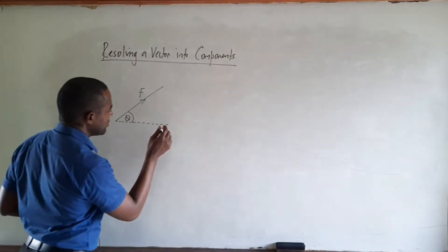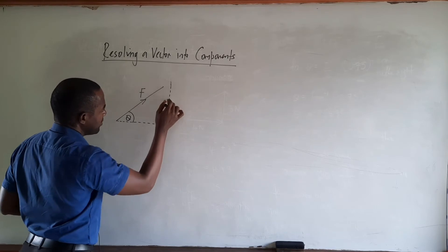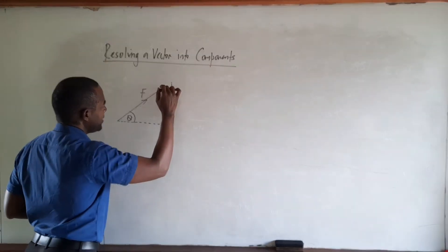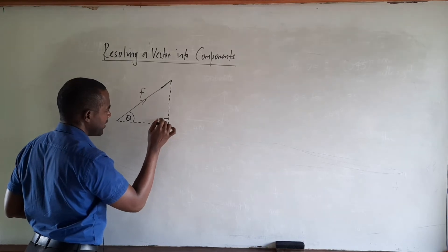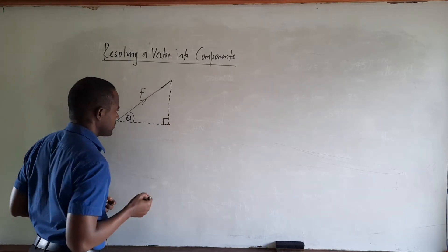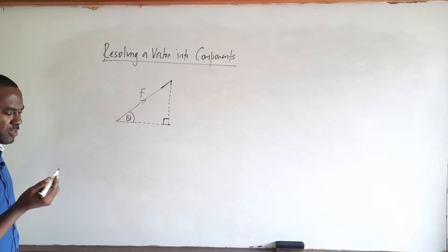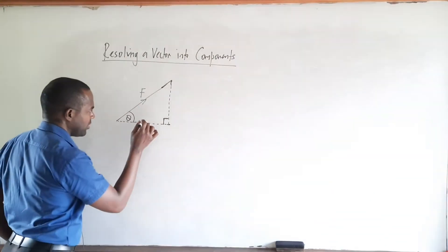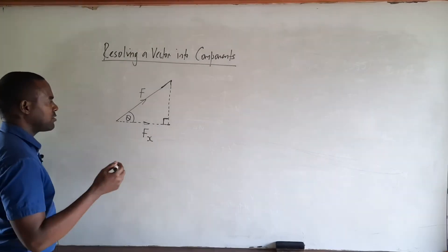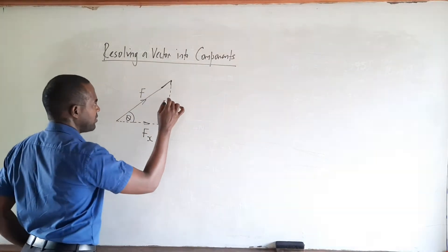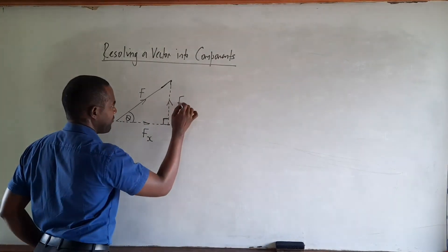We form the horizontal — the base of the triangle — and also the vertical — the height of the triangle — with a right angle here. This force will have a component in the horizontal direction; let's call it Fx. And it will also have a component in the vertical or Y direction; let's call it Fy.